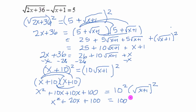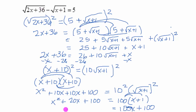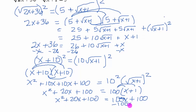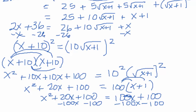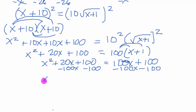On the right we have 100 times the binomial x plus 1. So we're going to distribute: that gives 100x plus 100. We notice we have an x squared, which means we've ended up with a quadratic equation. To solve a quadratic equation, we want to get 0 on one side and factor. So we subtract 100x and 100 from both sides. That gives us x squared minus 80x on the left, and the 100s cancel to give 0 on the right.